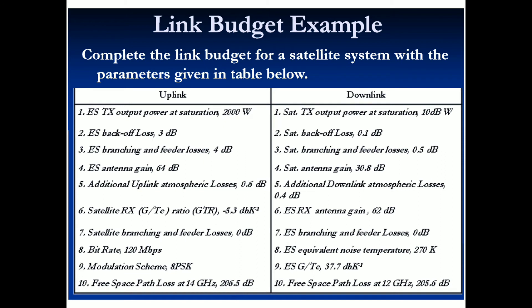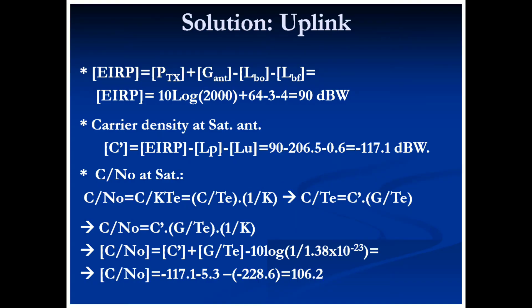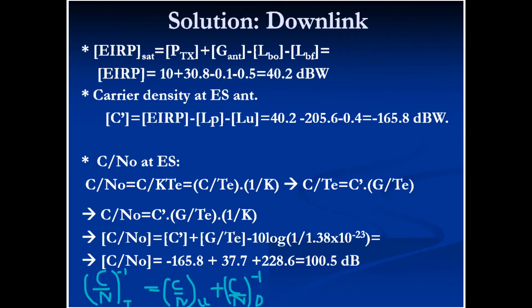Now let's solve a link budget problem. We are given parameters for both uplink and downlink, and we need to calculate the signal-to-noise ratio for each. One additional term here is backoff — a reduction in power level — which appears as a negative value in the losses equation. Using our derived formula, we calculate PT·GT, subtract the losses, and substitute values to get C/N for the uplink as 106.2 dB.